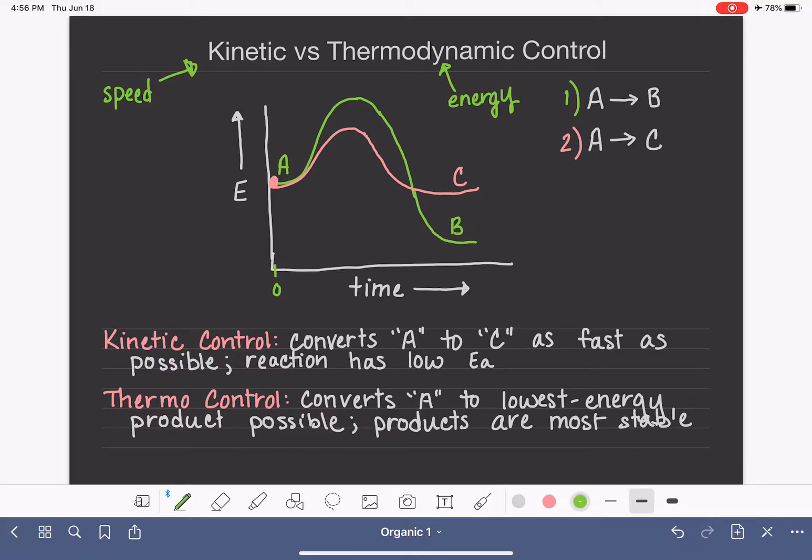So let's add one more thing up here to this graph. In green, this is a reaction that is under thermocontrol. Thermocontrol has high activation energy, but it has low energy products.